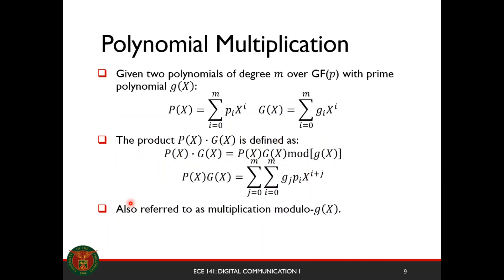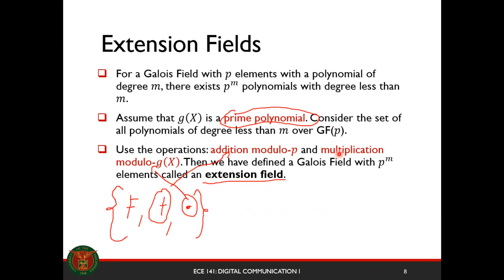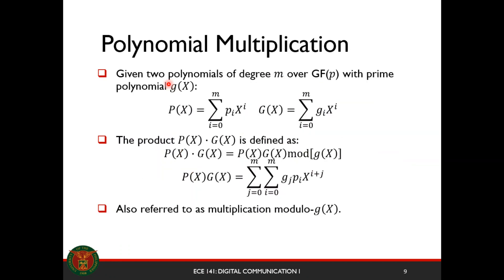Let's define polynomial multiplication. Given two polynomials of degree m, p(x) and g(x), the product p(x) times g(x) is defined by multiplying them normally as polynomials, but taking their remainder when divided by g(x), where g(x) is a prime polynomial under GF(p). This is also referred to as multiplication modulo g(x).